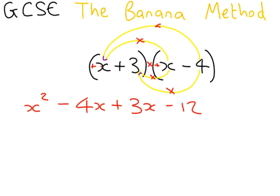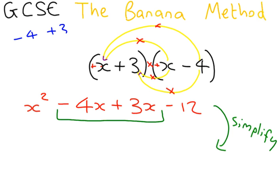So that is the expand bit done. The next part of the question, we have to simplify. So, to simplify, we have to do minus 4x add 3x. Now, I know people get confused about minus 4 add 3, so I want you to think of it as 3 take away 4, because it's the same thing.